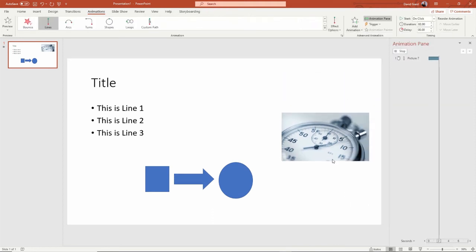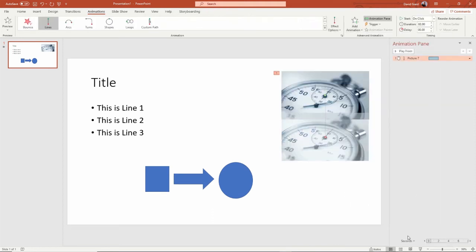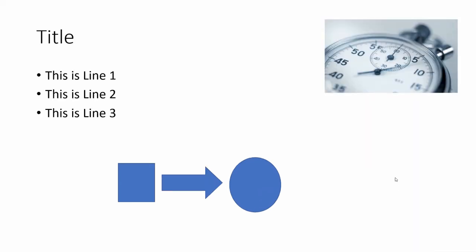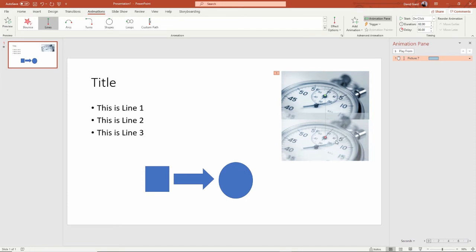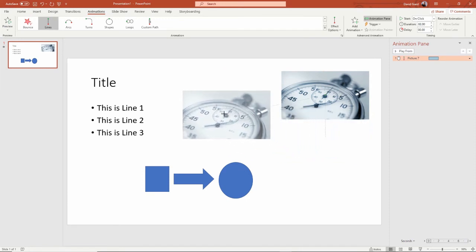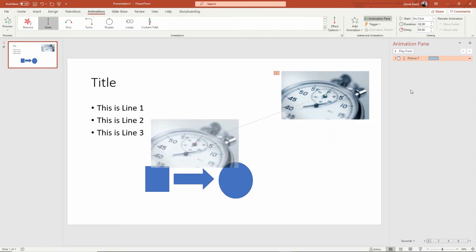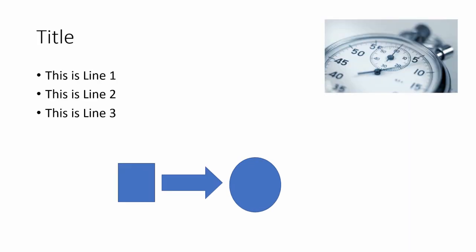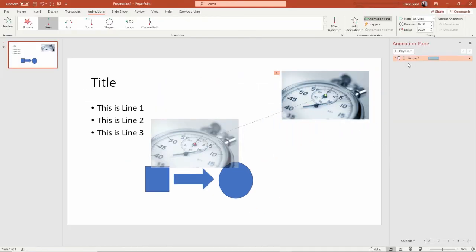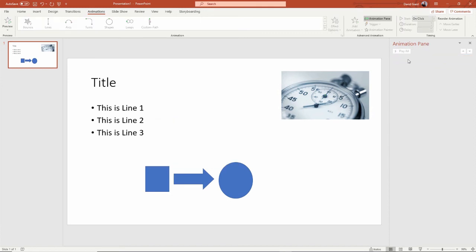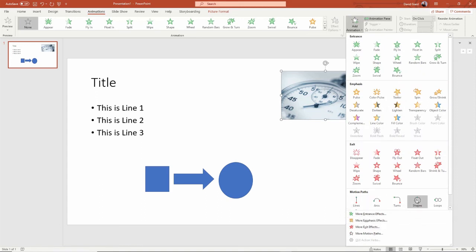I saw a preview of it right there — I can move that line from here to here. So on the click it moves in that direction. But I can also delete that and add a different motion path. You can see the popular ones are arcs, turns, shapes, and loops, but if I come down to more, I'll see all kinds of motion paths available.